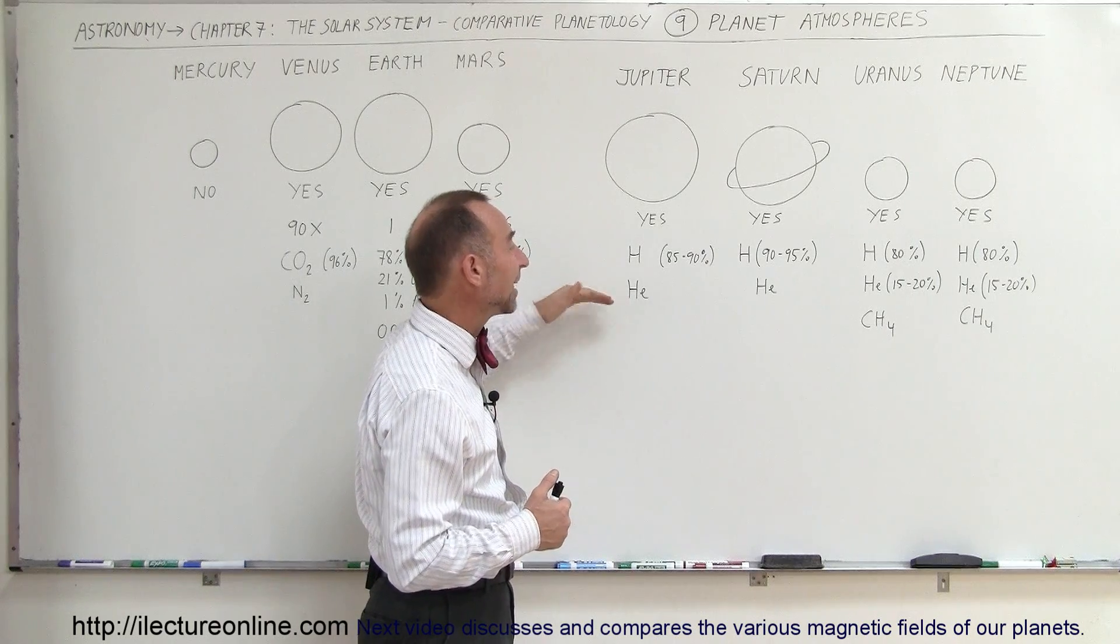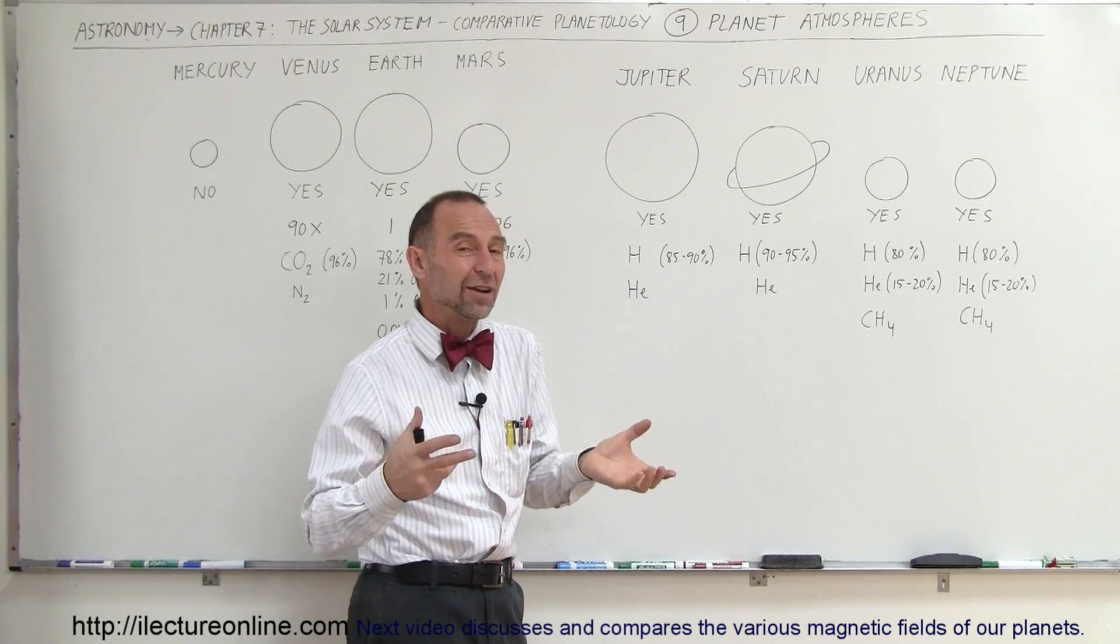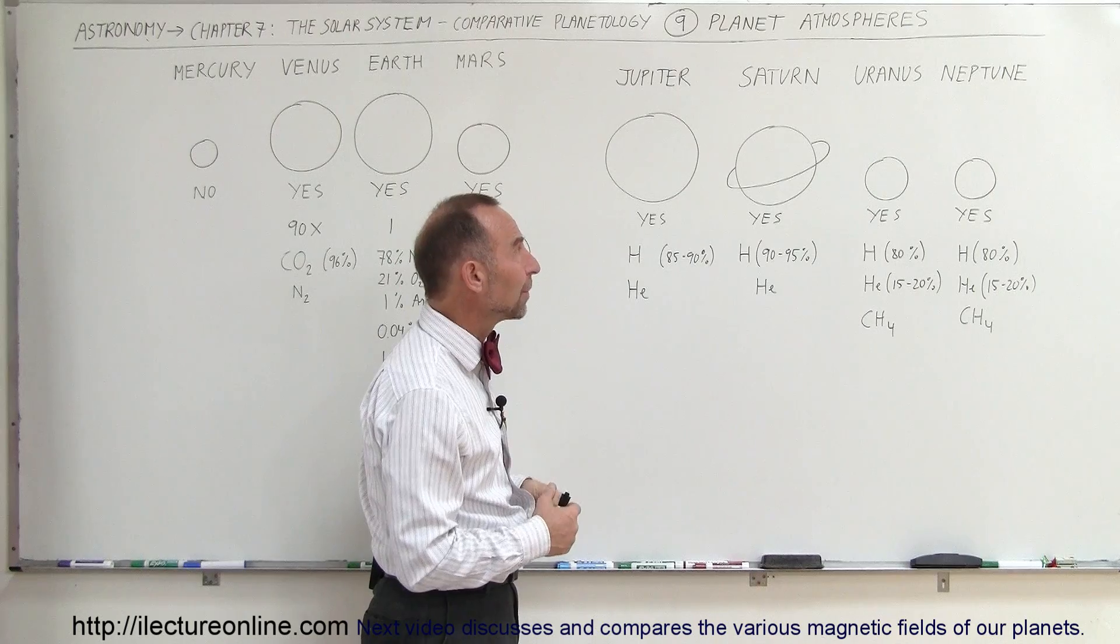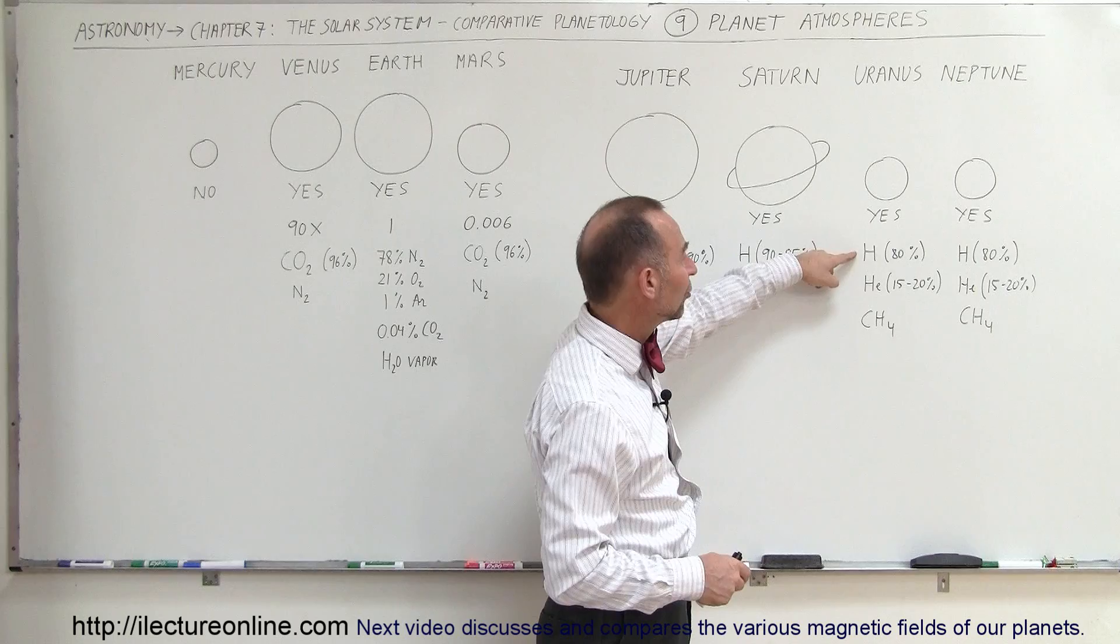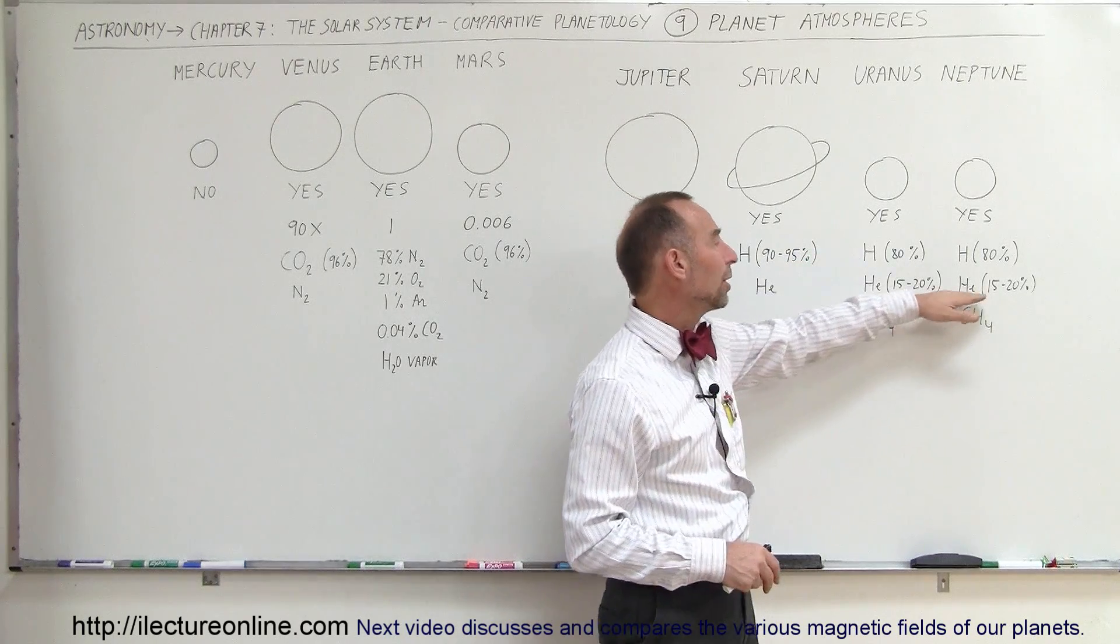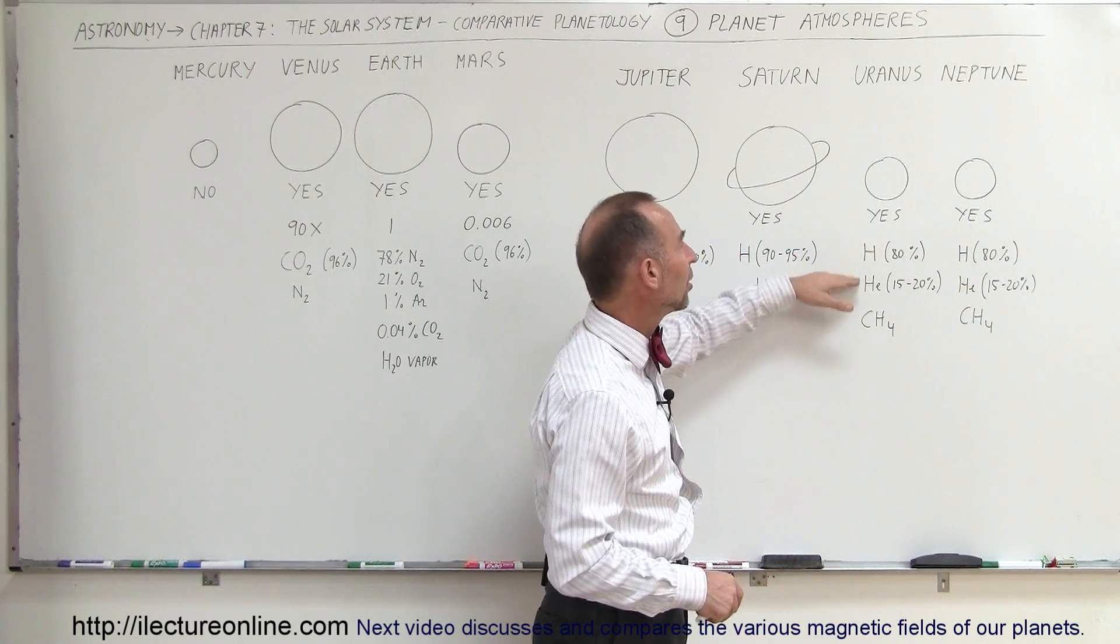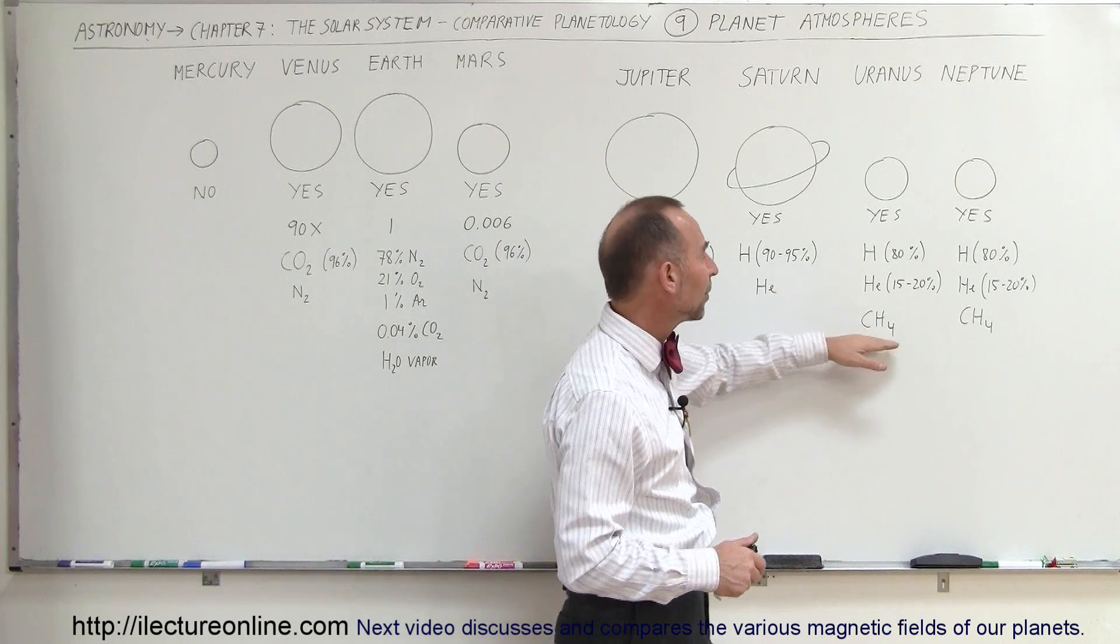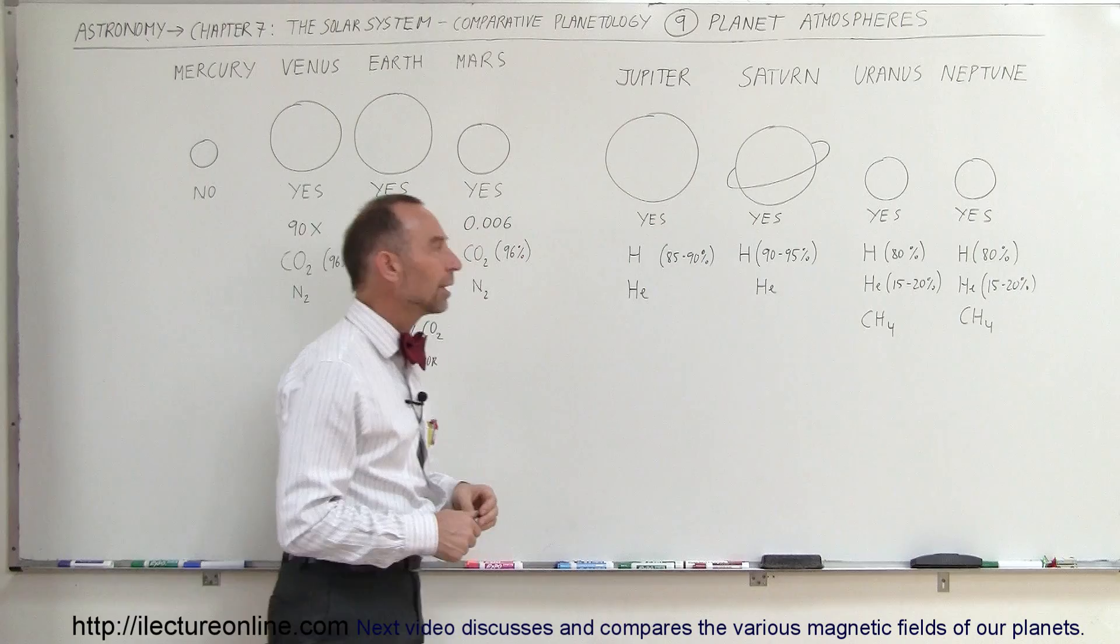This may also explain why Saturn is less dense as a planet compared to Jupiter, because we feel that this consistency is probably similar in the interior of Saturn as well. For Uranus and Neptune in the atmosphere, it's hydrogen about 80%, helium about 15 to 20%, and the methane is probably 2 to 3% of the total atmosphere.